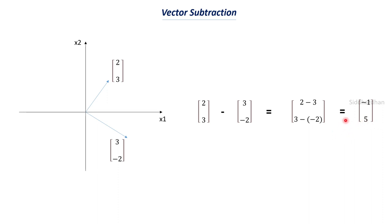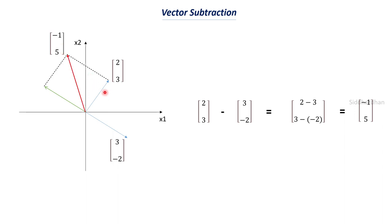Let me explain vector subtraction graphically. When subtracting the second vector from the first, you need to reverse the second vector — same magnitude but exactly opposite direction, 180 degrees. The reversed vector of 3,−2 becomes −3,+2. Then draw dotted lines to form a rectangle and take the diagonal — that gives you the difference. The diagonal value is −1,5, matching our mathematical result.